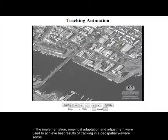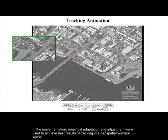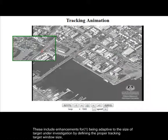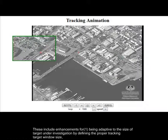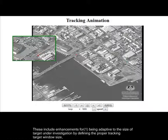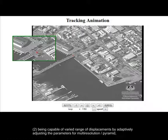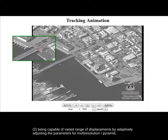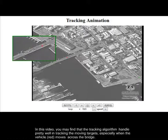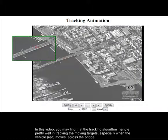In the implementation, empirical adaptation and adjustments were used to achieve the best results of tracking in a geospatially aware sense. This includes enhancements for being adaptive to the size of a target under investigation by defining the proper tracking target window size, being capable of a varied range of displacement by adaptively adjusting the parameters for multi-resolution, and being tolerant to occlusion by using momentum to track the target through a closed area. The tracking algorithm handles tracking of moving targets quite well.